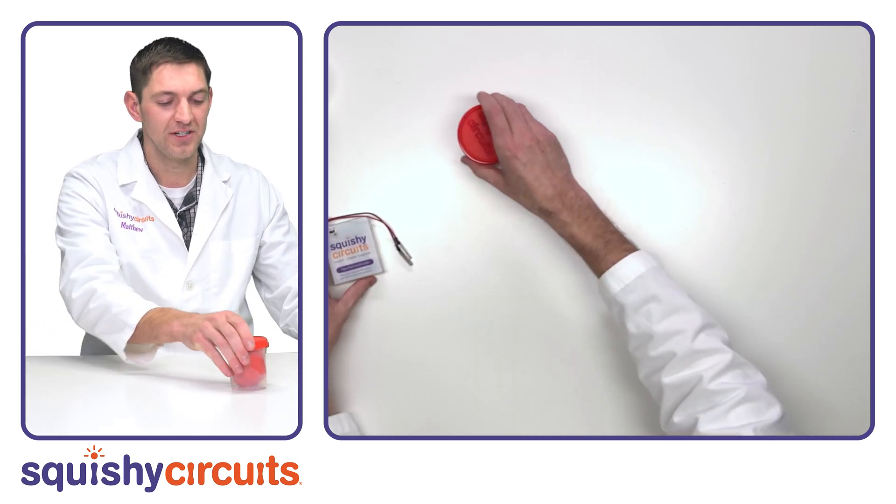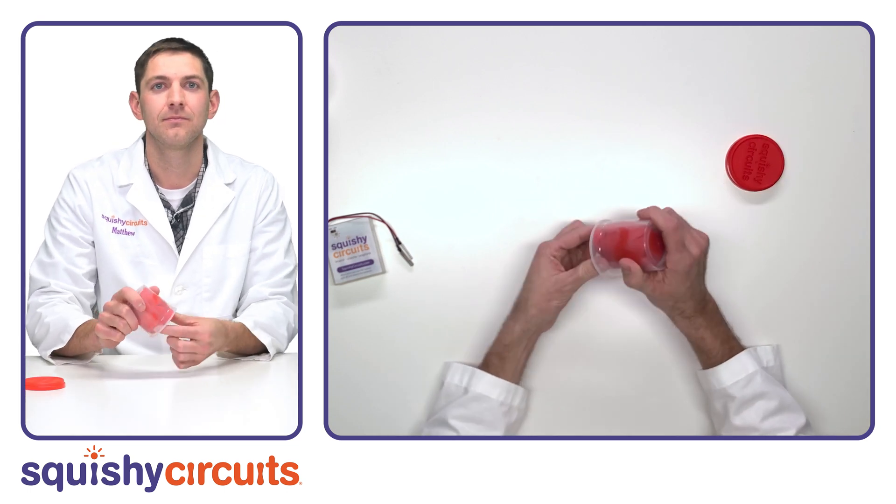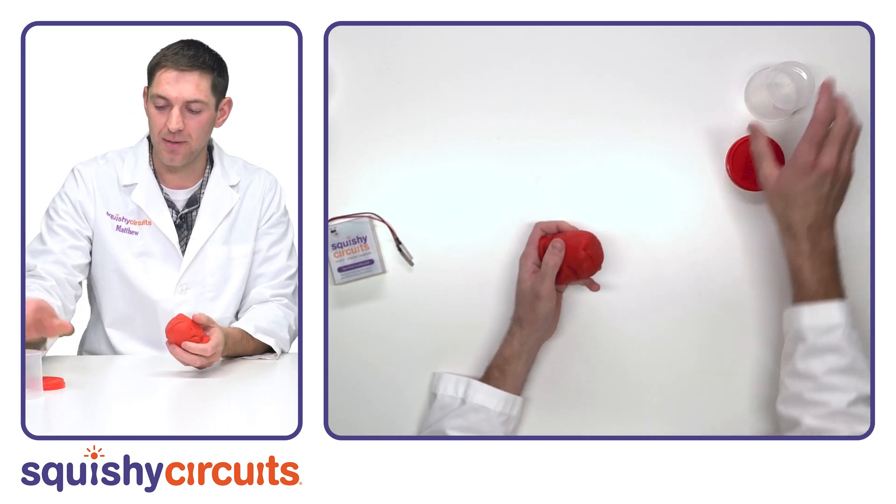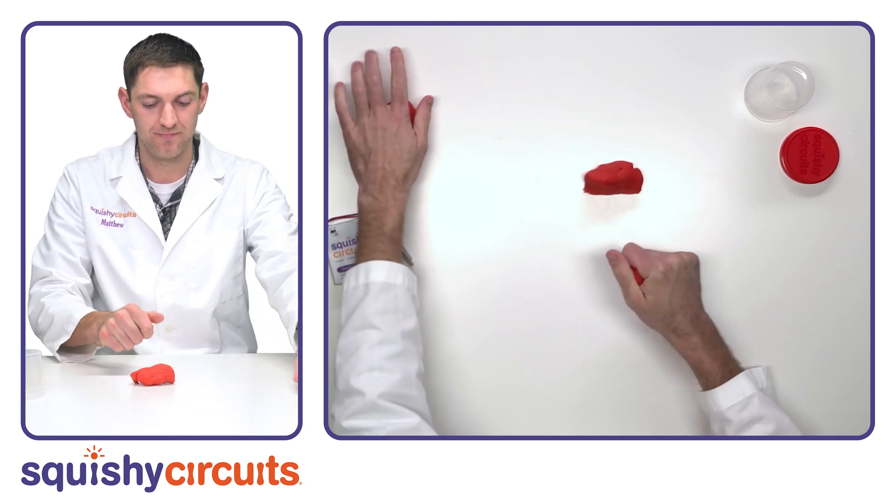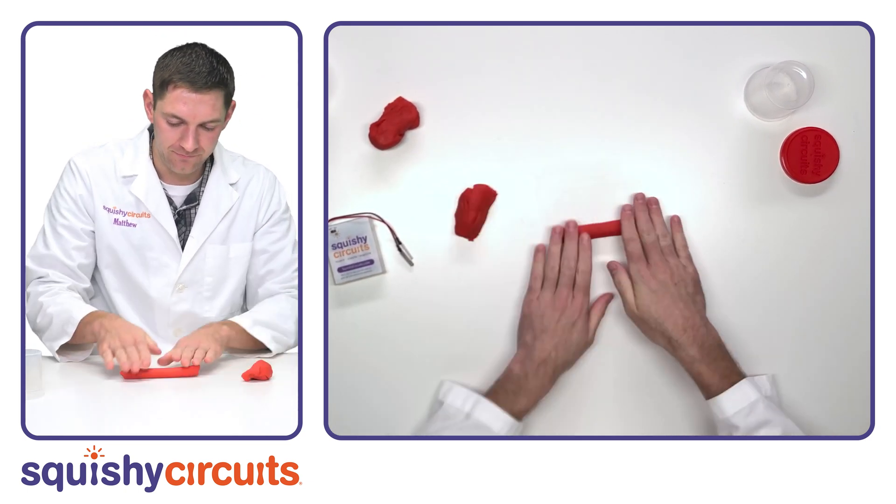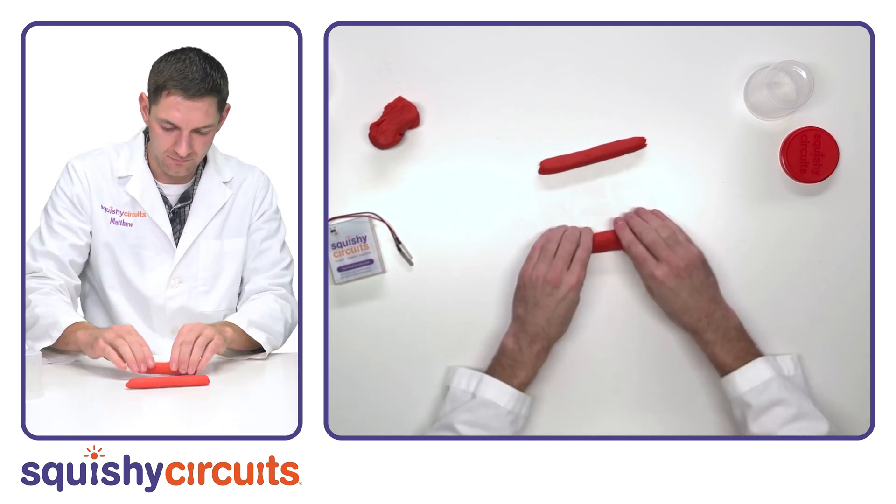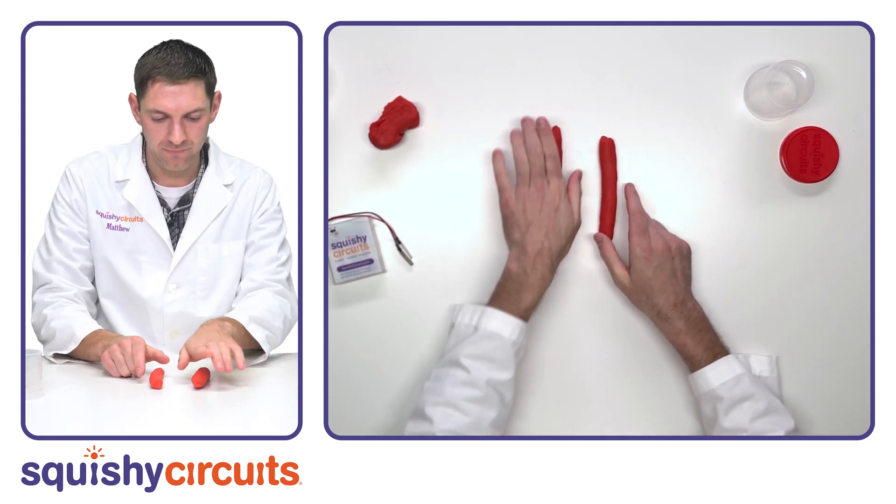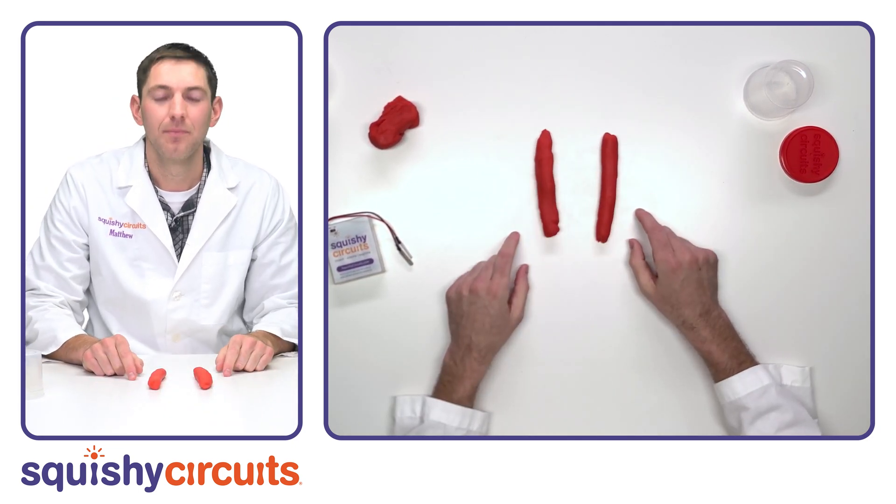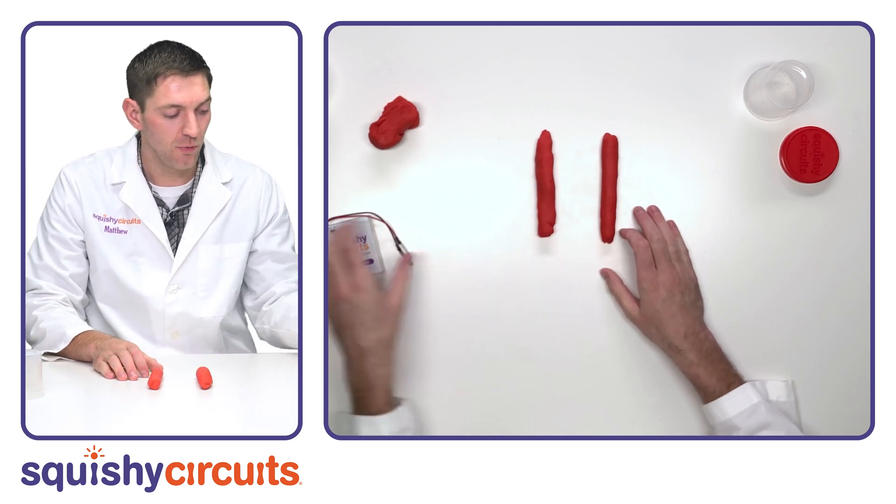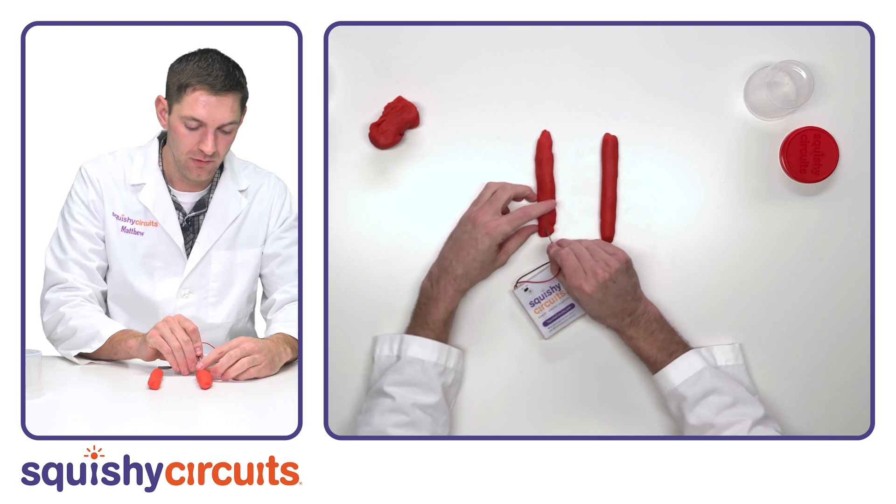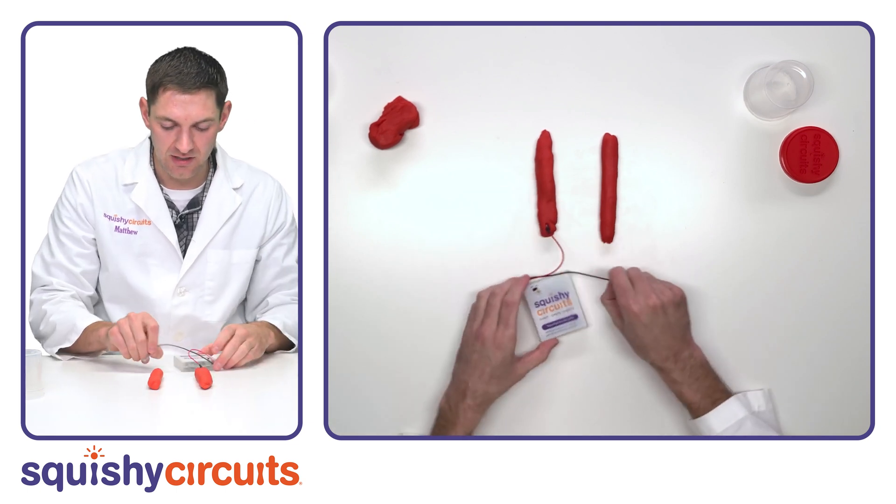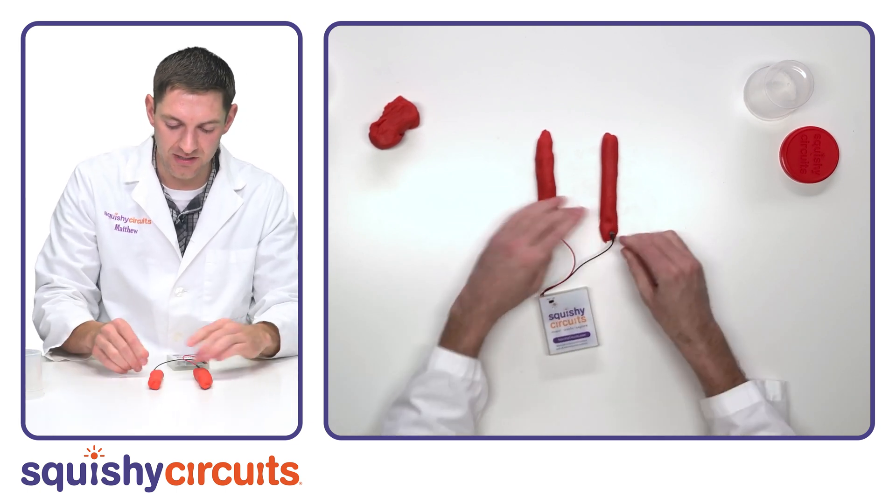Next, we need to use conductive dough, and we need two separate pieces of dough. I am going to roll out two snakes. Making sure the pieces aren't touching, we're going to add the terminals from our battery into the two pieces of dough. We'll put one into one piece, and the other terminal into the other piece of dough.